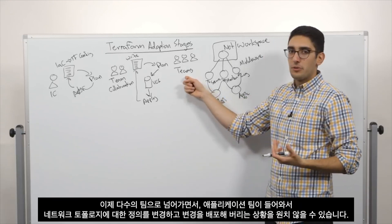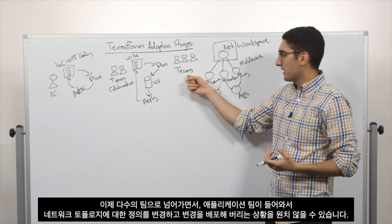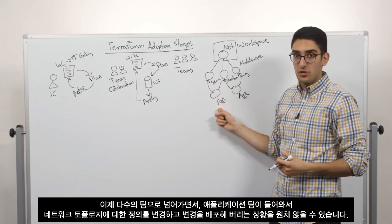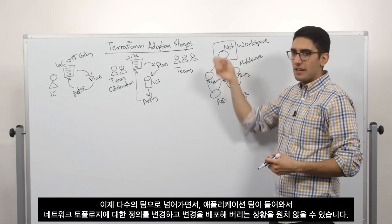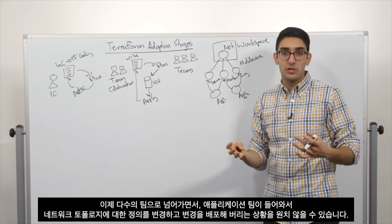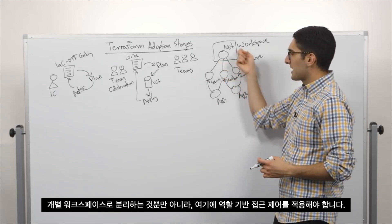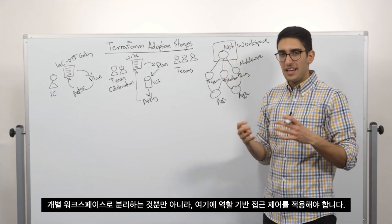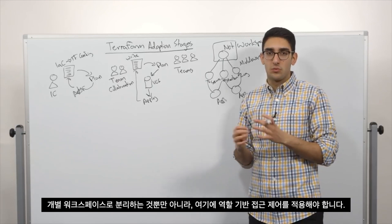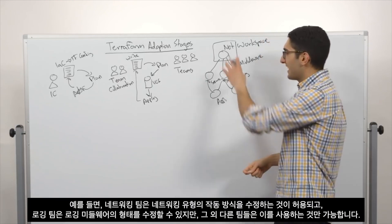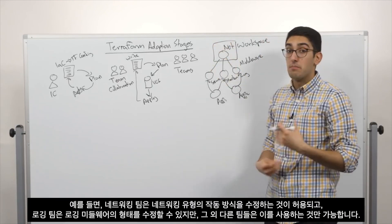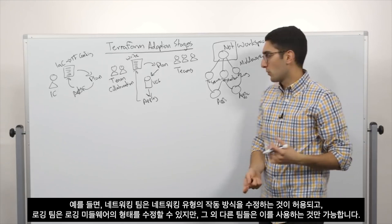Now as we get to multiple teams, we might not want to be in a situation where the application team could come in and change the definition of our network topology and just deploy a change. So on top of just separating it into independent workspaces, we begin to want to tie this back to role-based access control.